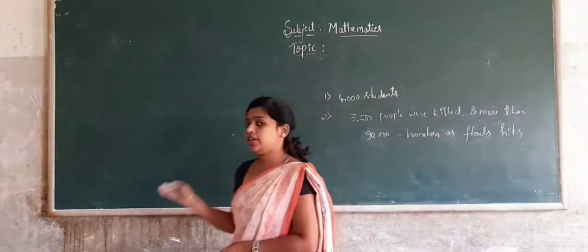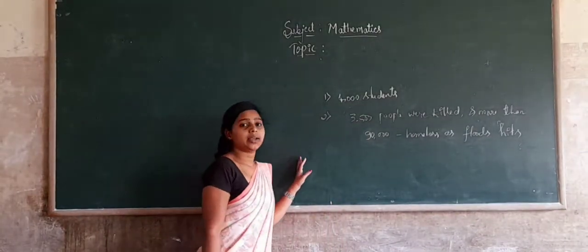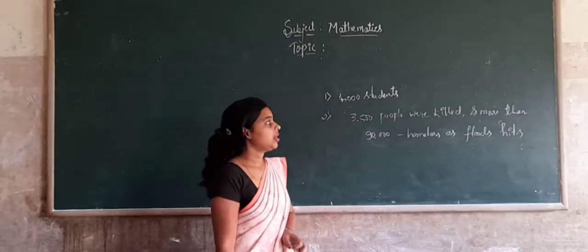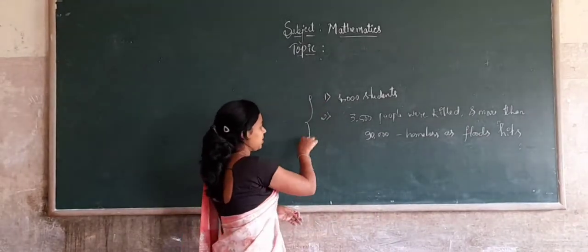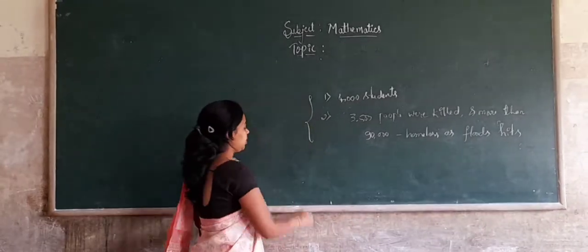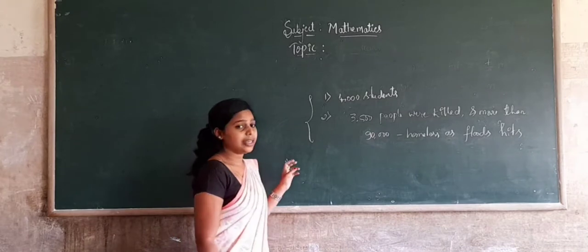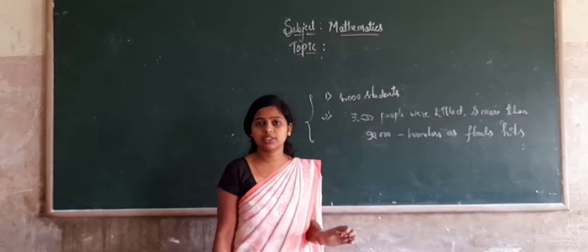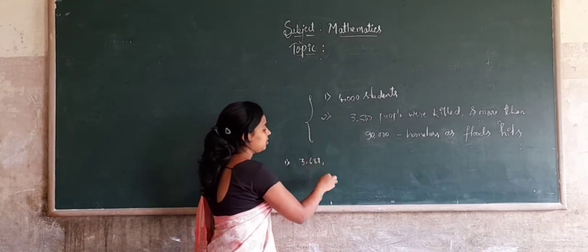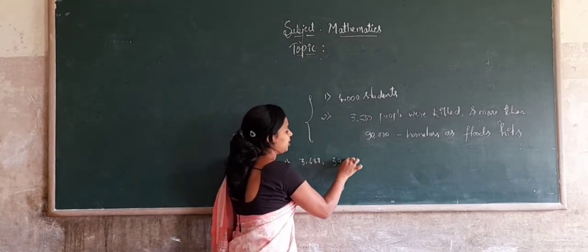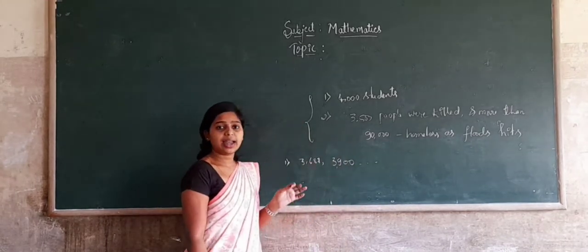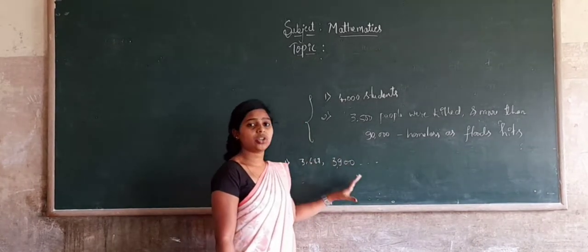Here, in these two clippings, can we see the exact numbers? Did exactly 4000 students visit? No. It may be 3600, 3700, 3900, and so on. Here, exact numbers were not given.